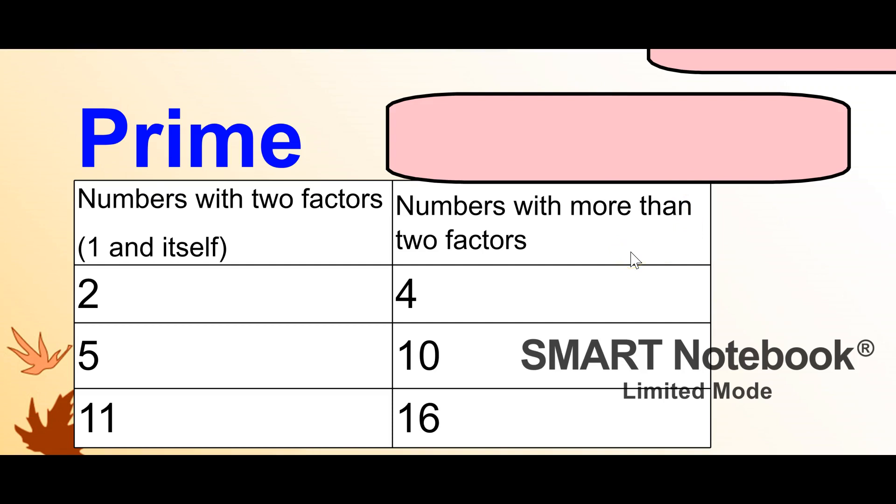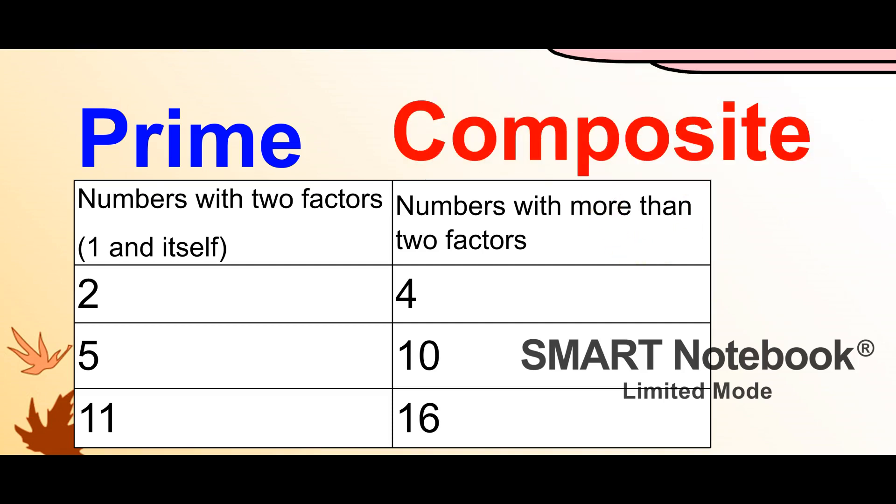When a number has more than two factors, it is called a composite number.